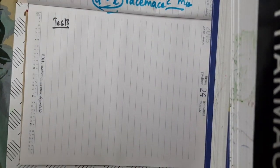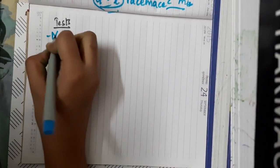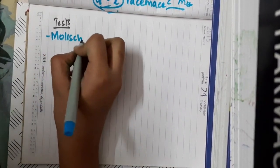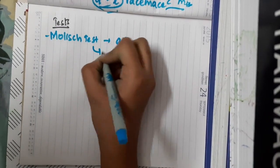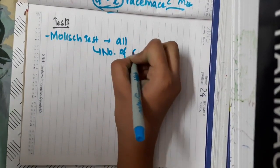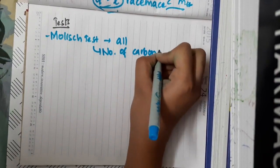First test which we have here is Molisch test. This Molisch test is the general test which is given by all carbohydrates whose carbon numbers have more than 5 carbons.